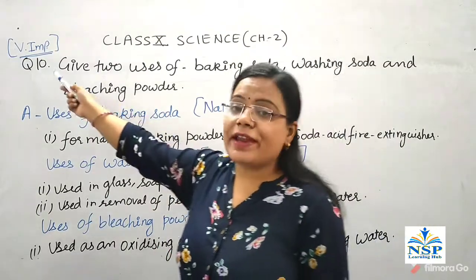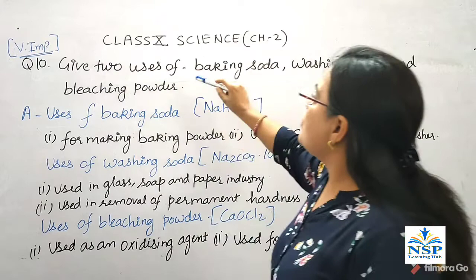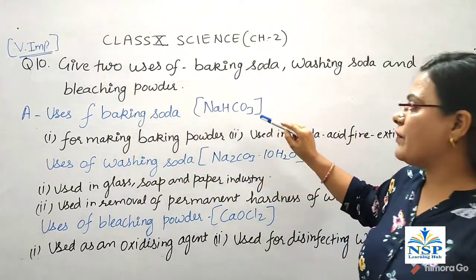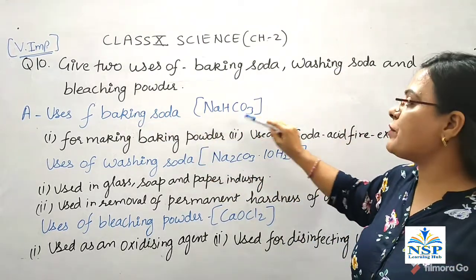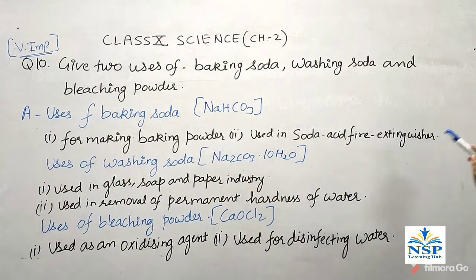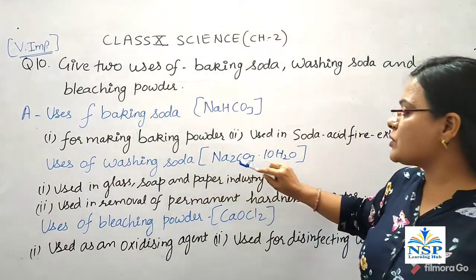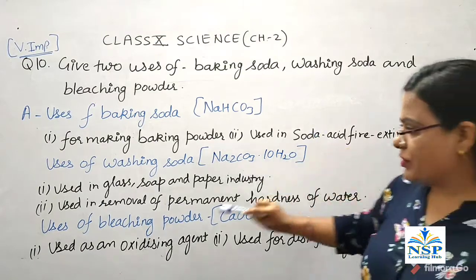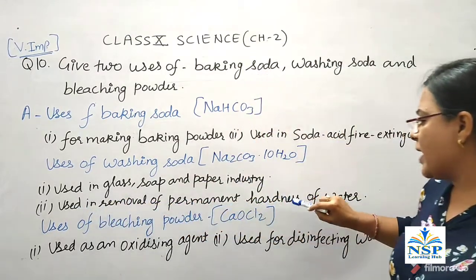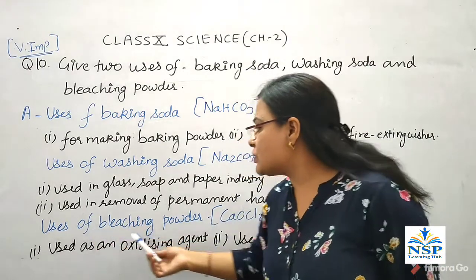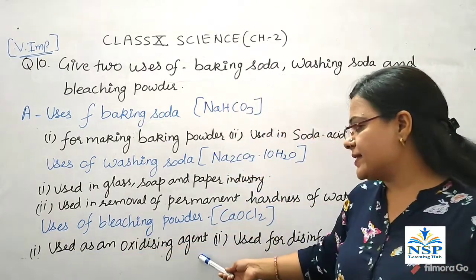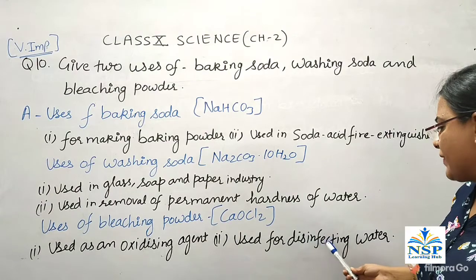Question number 10 is very important: Give two uses of baking soda, washing soda, and bleaching powder. Baking soda, which is sodium bicarbonate or sodium hydrogen carbonate, is used for making baking powder and used in soda-acid fire extinguishers. Washing soda, which is sodium carbonate or hydrated sodium carbonate, is used in the glass, soap, and paper industry and also for removal of permanent hardness of water. Bleaching powder, which is calcium oxychloride, is used as an oxidizing agent and also for disinfecting water.